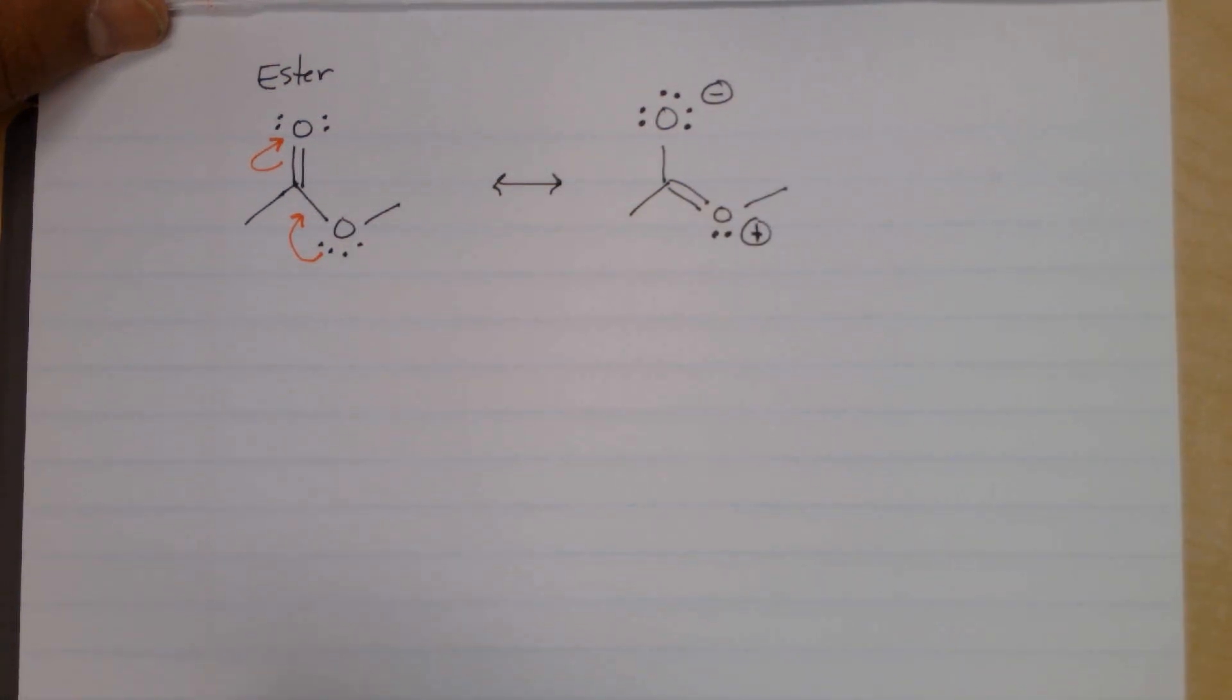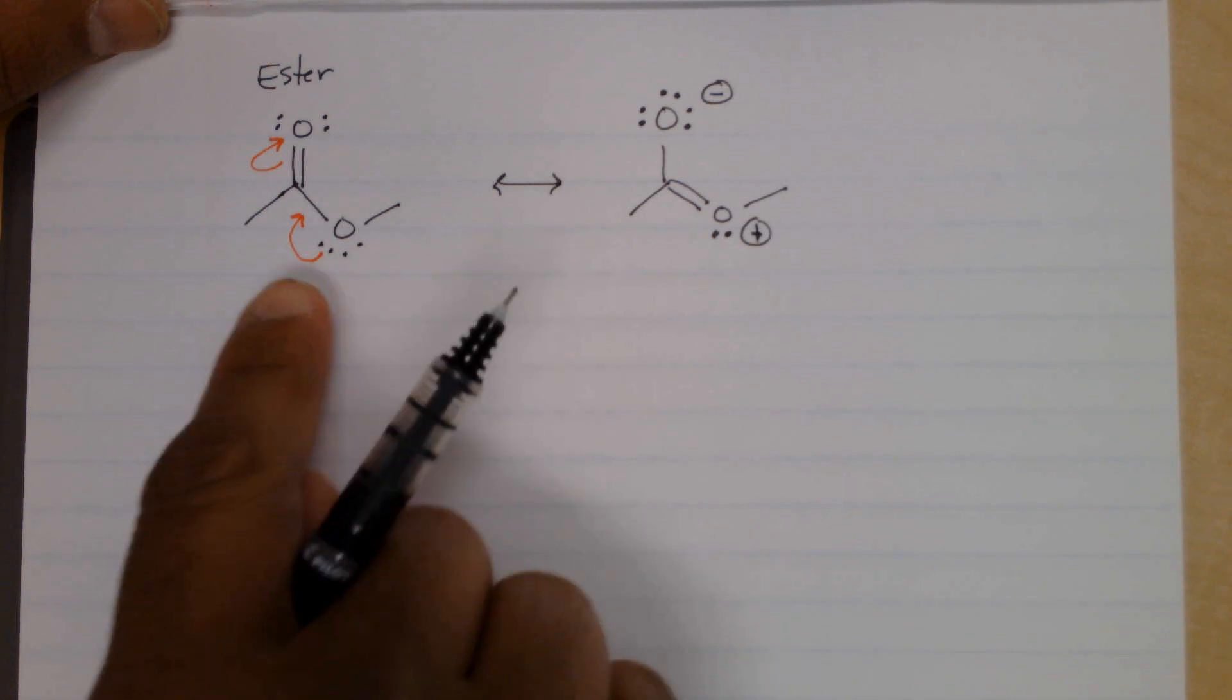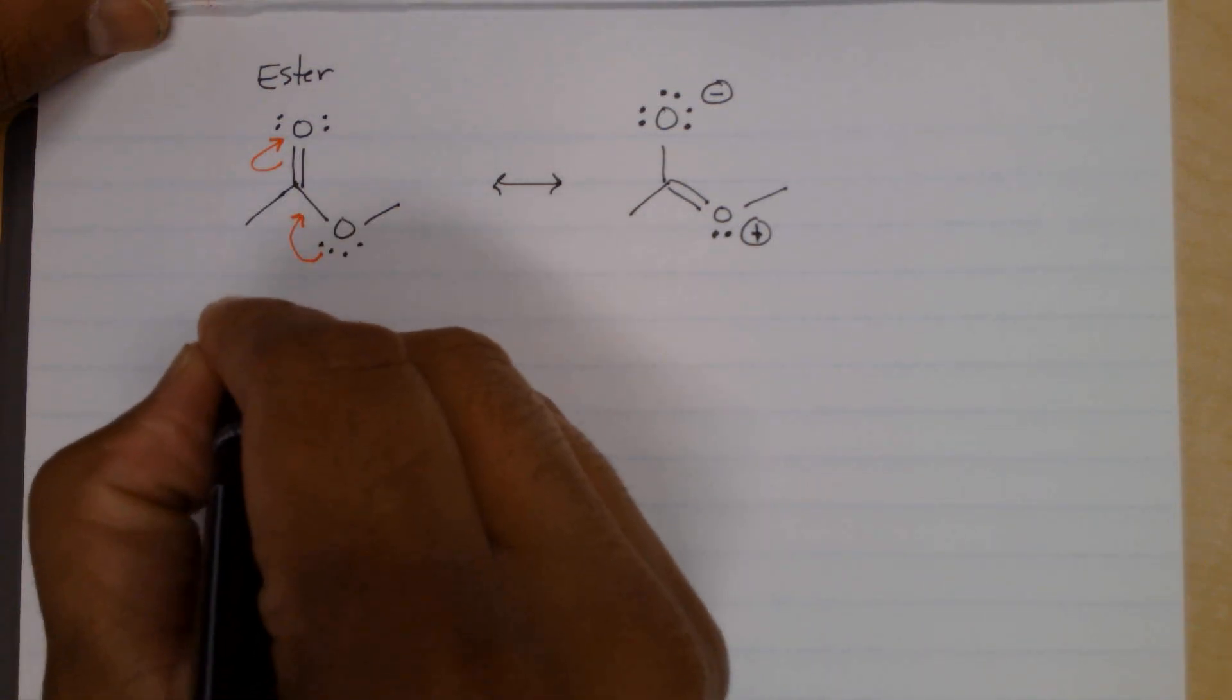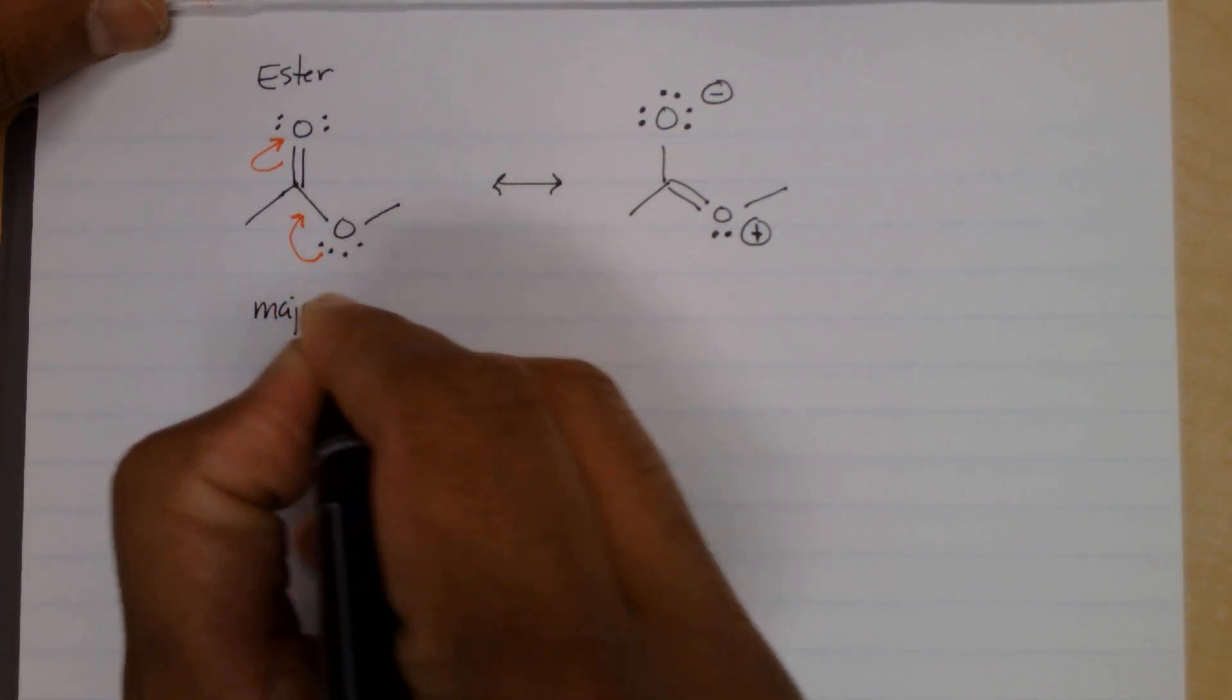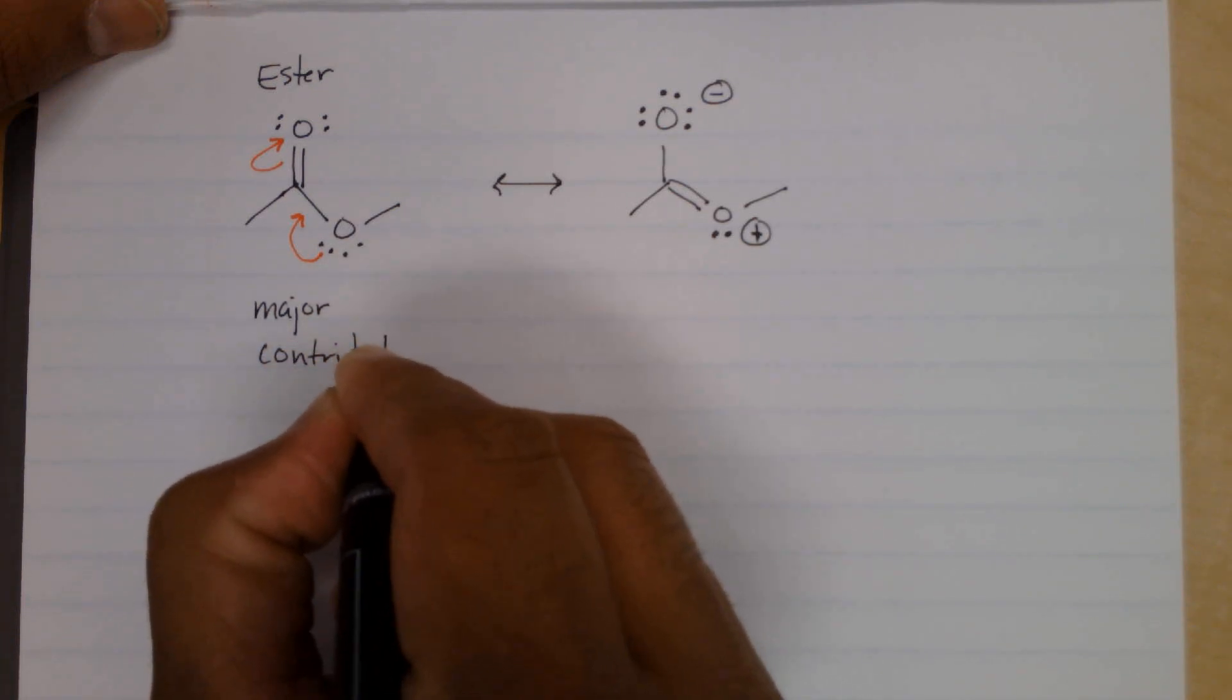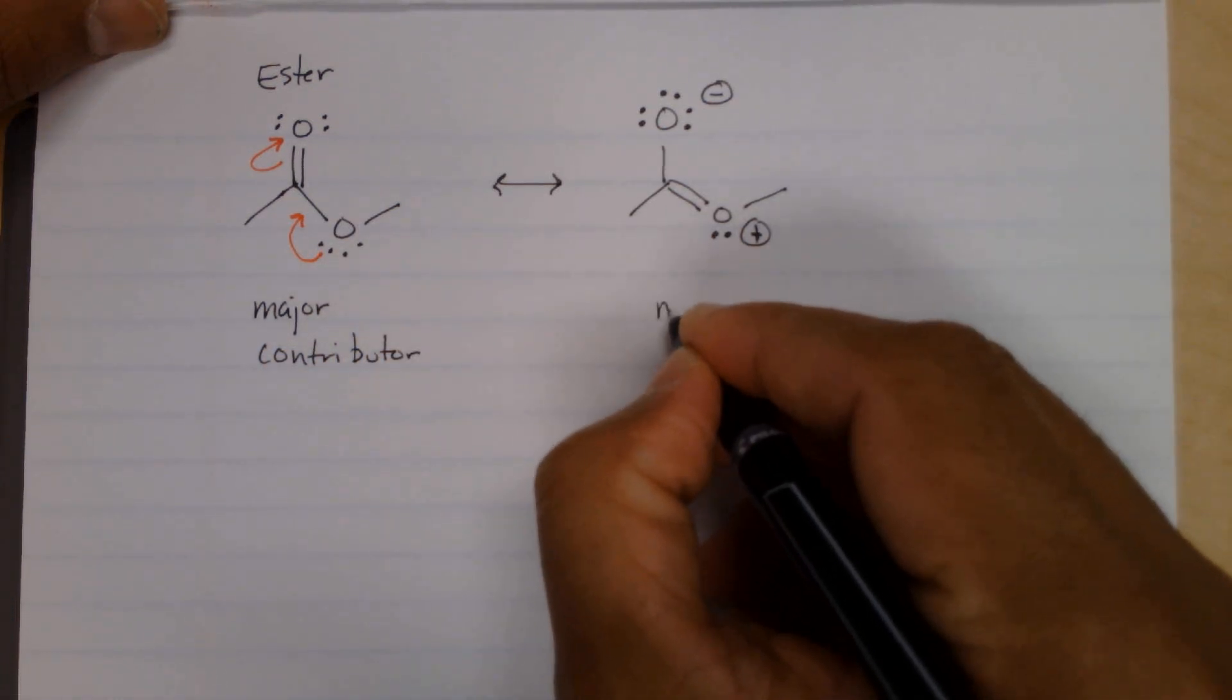Now this brings up another question. Are these resonance structures equal? And the answer is no. This is what we call the major contributor. And this would be called the minor.